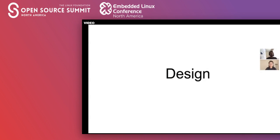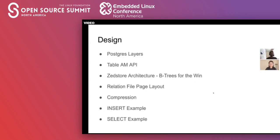Now let's talk about ZStore's design. We'll be discussing where the table access method API sits in the Postgres layers, the unique B-tree-based architecture for ZStore, what the file layout looks like, how we do compression, and then finish things off with a single row insert example and a single row select example.